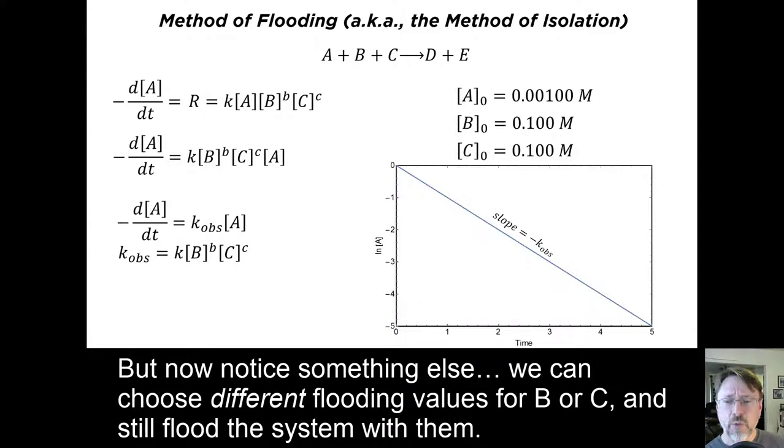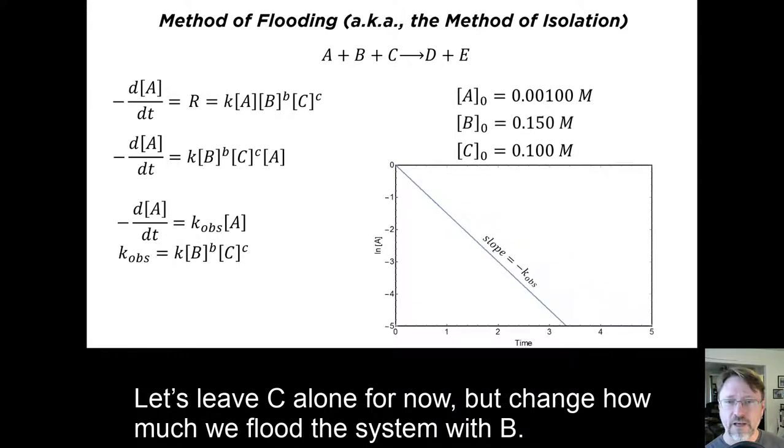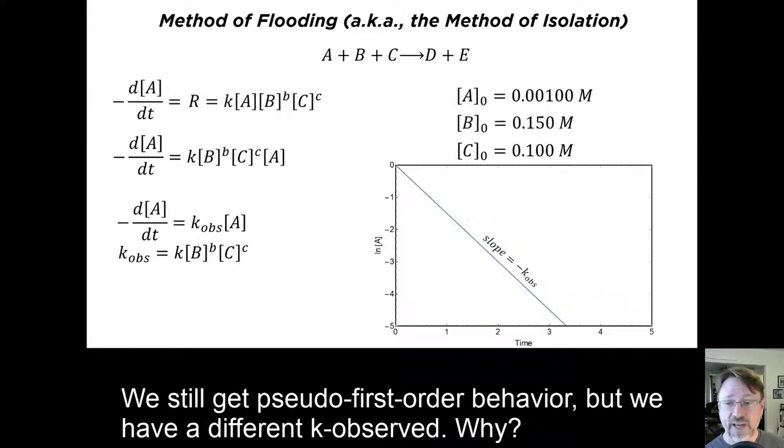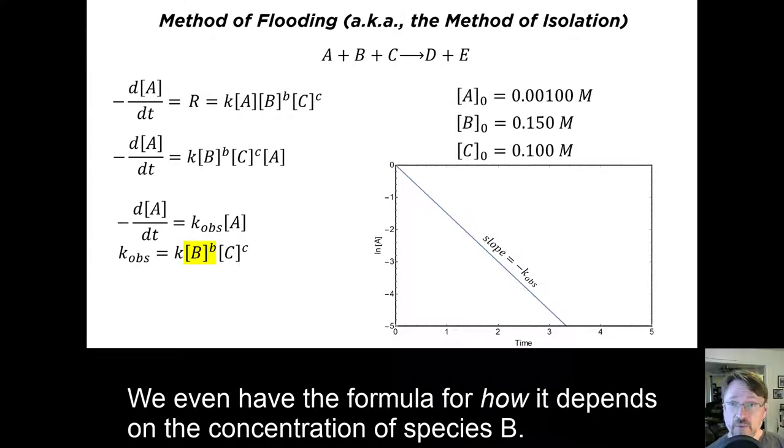But now notice something else. We can choose different flooding values for B or C, and still flood the system with them. Let's leave C alone for now, but change how much we flood the system with B. We still get a pseudo first order behavior, but we have a different K observed. Why? Because the value of K observed depends on the concentration of species B. We even have the formula for how it depends on the concentration of species B.